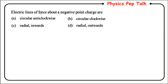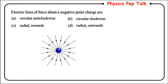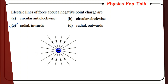Final question: electric lines of force about a negative point charge are — circular anticlockwise, circular clockwise, radially inwards, or radially outwards? We know that for a negative charge the electric field lines are radially inwards. Therefore option C is the correct answer. That's it for this video — I will meet you in the next video. Until then, have a nice day, bye.